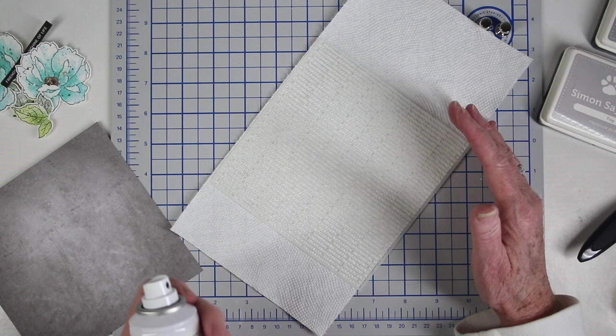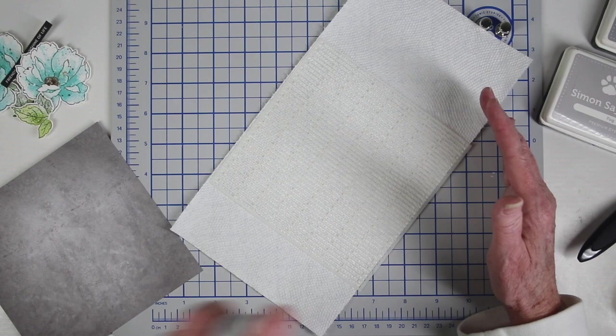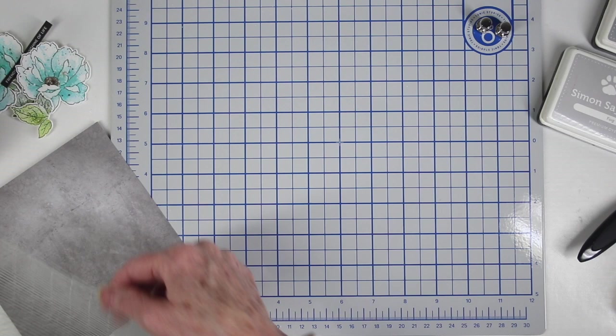To use Pixie Spray, you want to just do some bursts of spray, and make sure that you cover your entire stencil, and I'm just working on a paper towel. This is a really lightweight adhesive, so it'll peel off my paper when I'm done doing my stenciling.